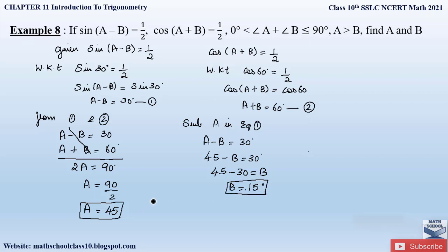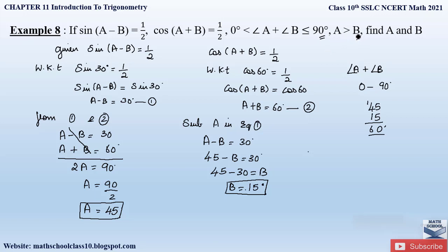Let us now check the conditions given. They stated that angle A plus angle B should lie between 0 to 90 degrees. Angle A is 45 degrees and angle B is 15 degrees, so A + B equals 60 degrees, which lies between 0 to 90 degrees — so this first condition is satisfied. The second condition is that angle A should be greater than angle B: our angle A is 45 degrees, which is indeed greater than angle B at 15 degrees.